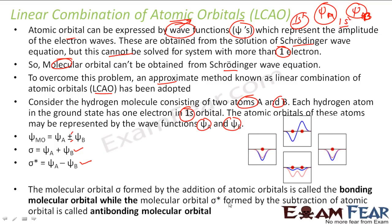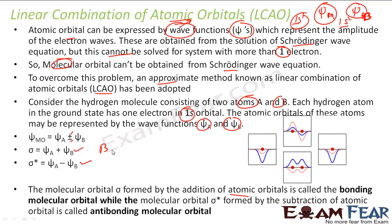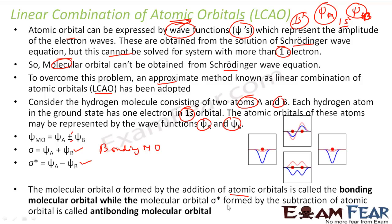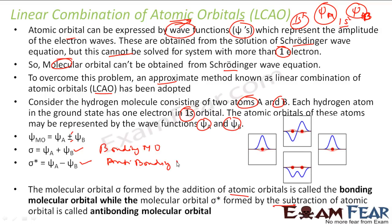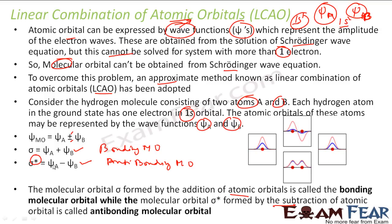The molecular orbital formed by addition of atomic orbitals — the plus combination — is called the bonding molecular orbital. And the one formed by subtraction is called the antibonding molecular orbital. Please note, the antibonding molecular orbital has a star mark. This is antibonding; this is the bonding molecular orbital.